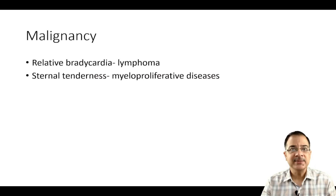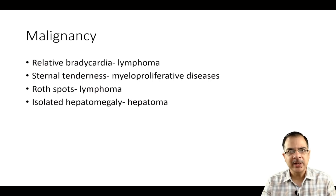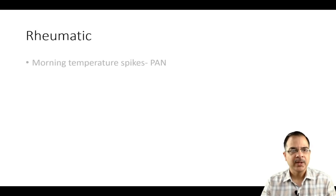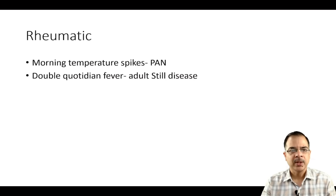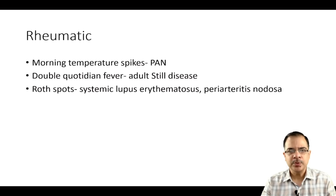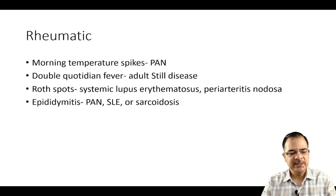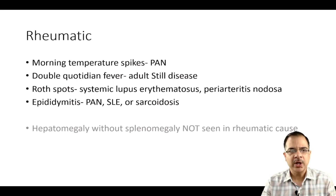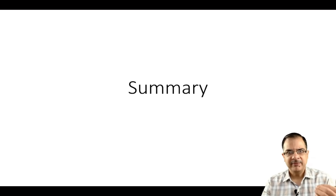Sternal tenderness is seen in myeloproliferative disorders. Roth spots can be present in lymphoma. Isolated hepatomegaly is seen in hepatoma, which is one malignancy that presents with fever. In rheumatic diseases, morning temperature spike is seen in polyarteritis nodosa. Double fever in a day is seen in adult Still's disease. Roth spots are seen in SLE and polyarteritis nodosa. Episcleritis is seen in polyarteritis nodosa, sarcoidosis, or SLE. Hepatomegaly without splenomegaly is not a feature of rheumatic disease.